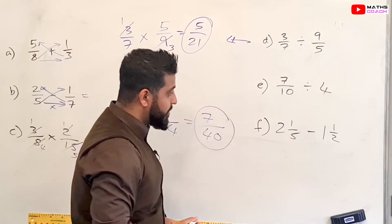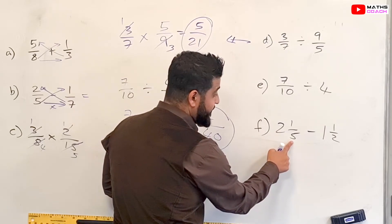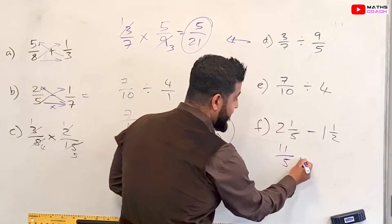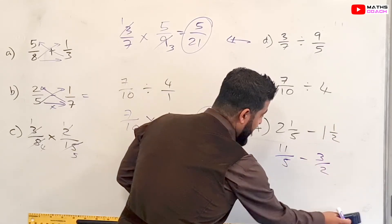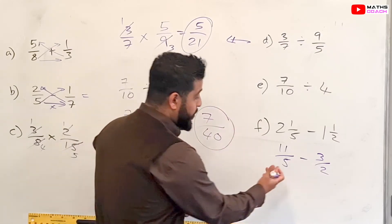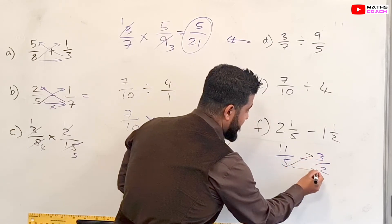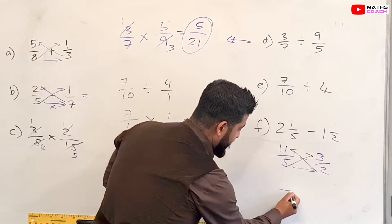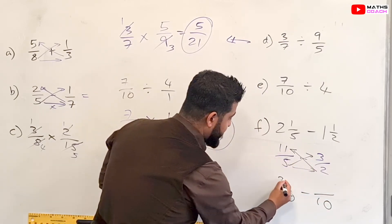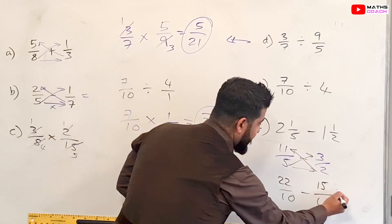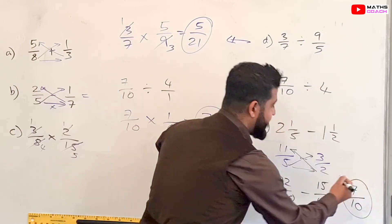On to this final one. We have mixed numbers. So the first thing we're going to need to do is convert this into a top heavy. So 2 times by 5 which is 10 plus 1 is 11. 11 over 5 minus 1 times by 2 is 2 plus 1 is 3. So 3 over 2. And we deal with it as we did previously. We want to have the denominator the same. So we're going to multiply here, and then we're going to multiply this, and we're going to multiply that. So 5 times 2 is 10, and then 2 times 11 is 22, and 5 times 3 is 15. So you end up with 22 minus 15 which is 7. 7 over 10 is our answer.